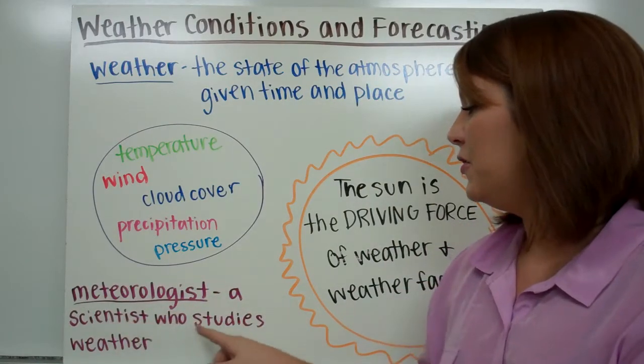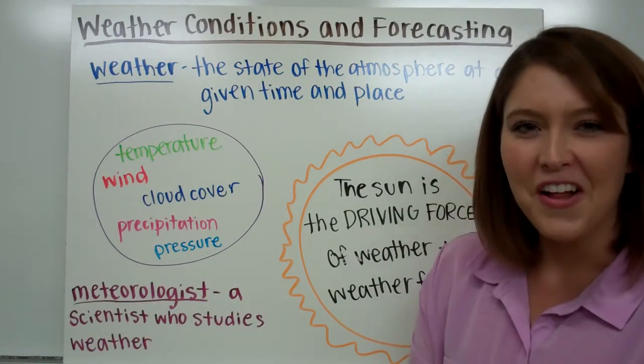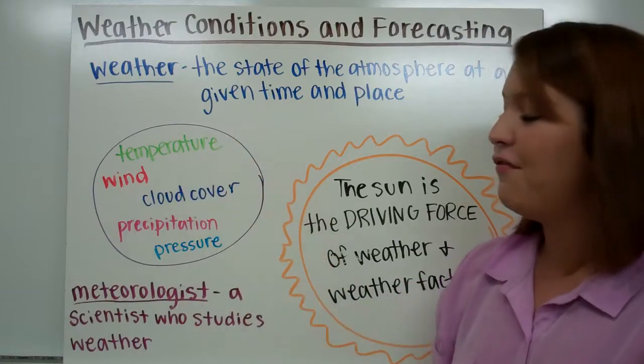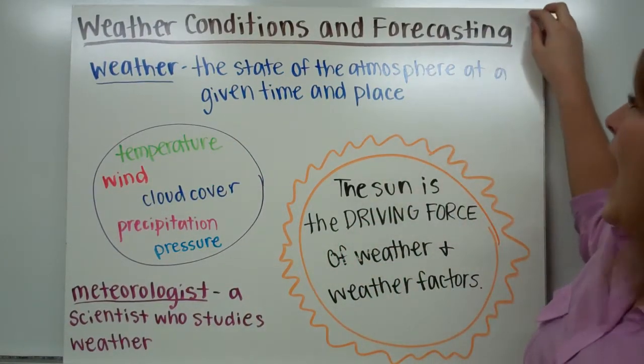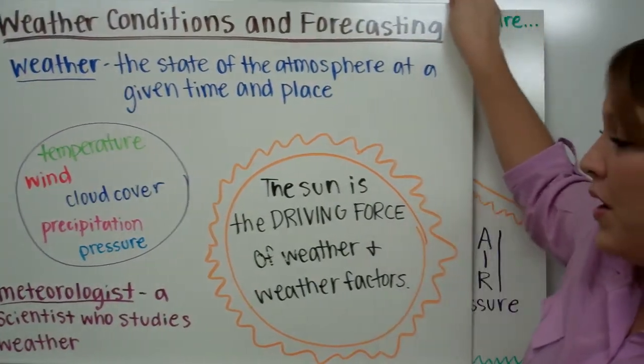A meteorologist is a scientist who studies weather. We're going to be meteorologists today and we're going to look at all these different factors and how they're related to the weather that we see on Earth, and also how we can use those to predict future weather.